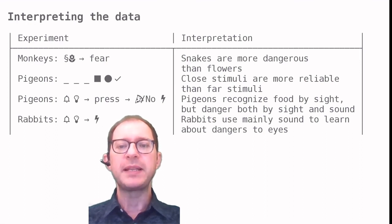For the rabbit eye blink study, we can note that the function of the eye blink is to protect the eye. If the danger is mostly flying insects, then it makes sense to learn more about sounds than about sight, like the sound of a buzzing bee or fly.